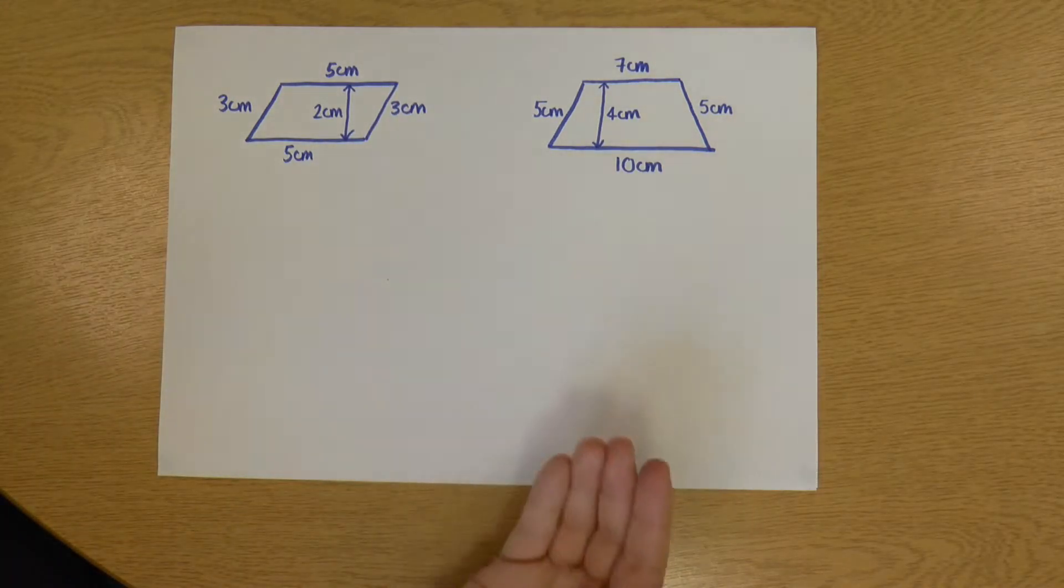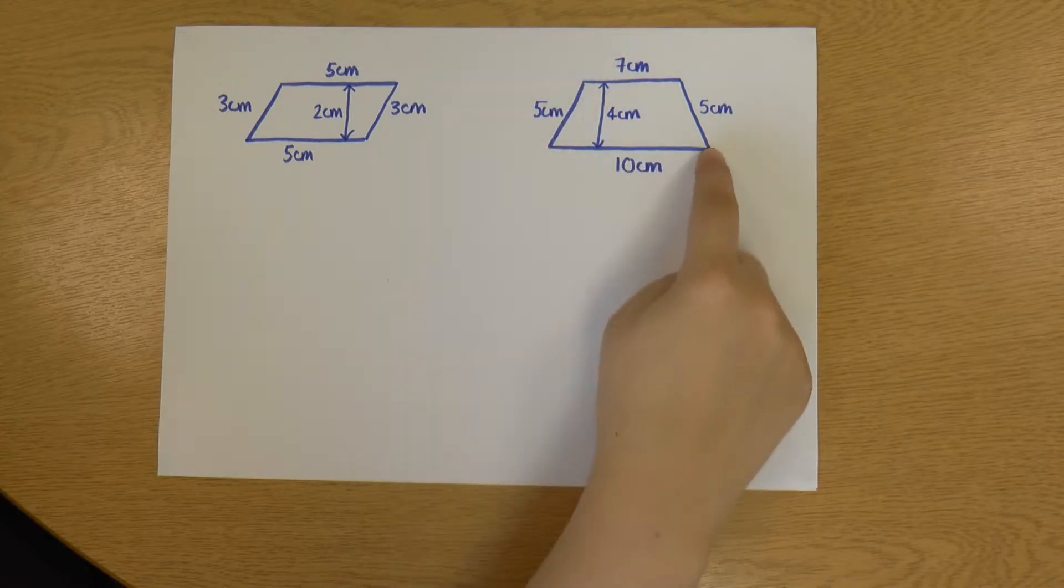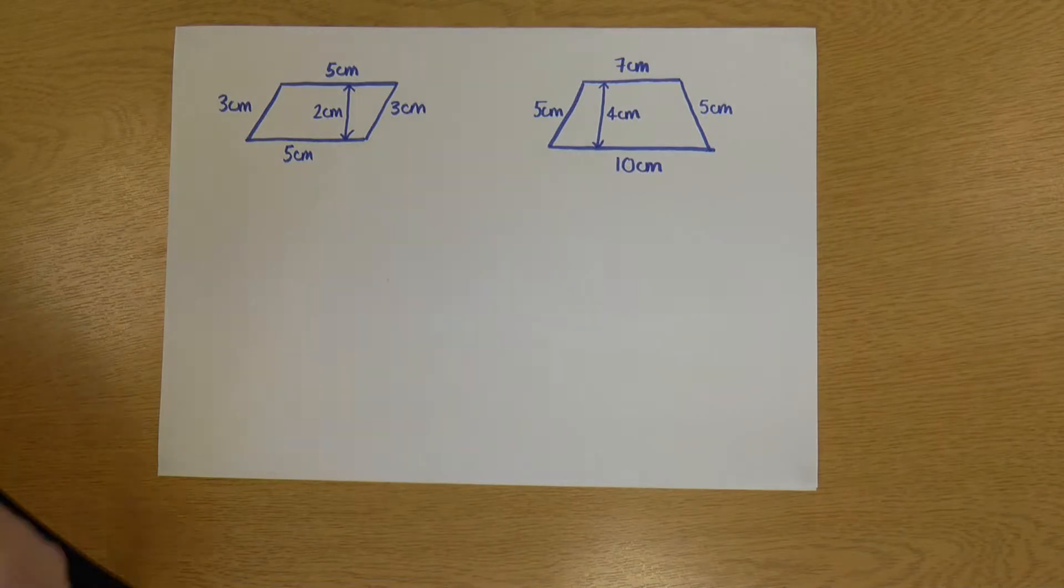And for my trapezium, again, same deal. I do 5 plus 10 plus 5 plus 7. The perimeter of these shapes is actually quite easy - I just add the lengths of the sides.